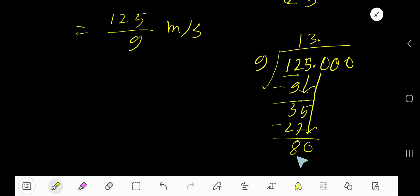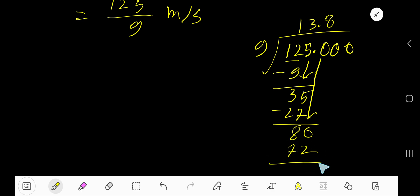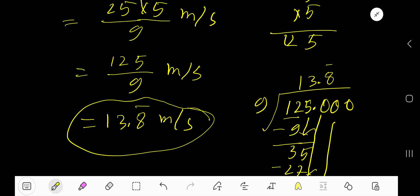9 goes into 80 how many times, 8 times. 8 times 9, 72. Subtract, we are getting 8. Bring down another 0. Again 80, 9 goes into 80, again 8 times. That is, this 8 is repeating, so you can place here bar. So 13.8 bar meter per second. And this is the result.